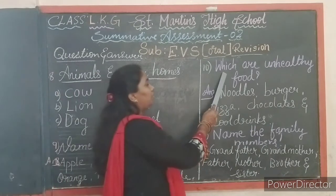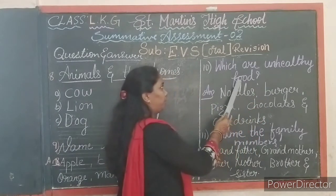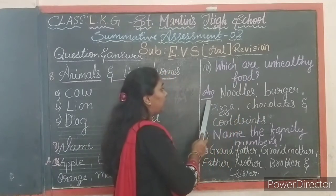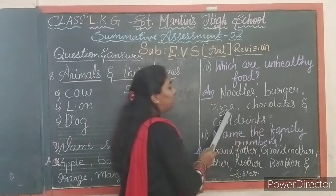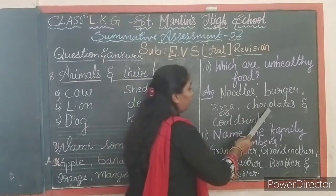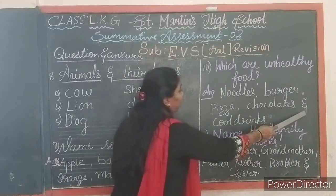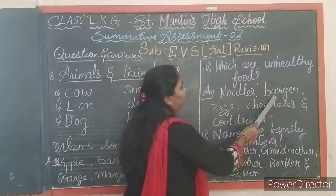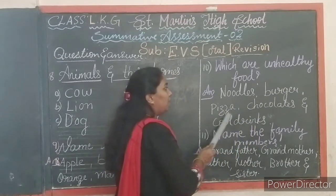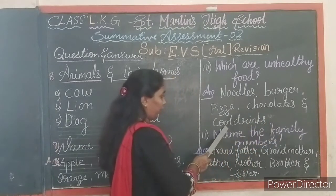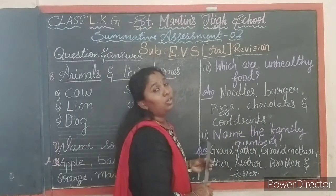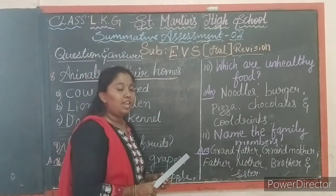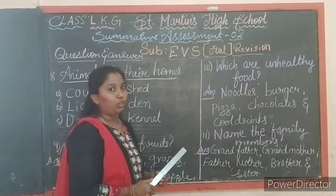Next question: which are unhealthy food? Answer — noodles, burger, pizza, chocolates and cool drinks. Say once again children — noodles, burger, pizza, chocolates and cool drinks. What are unhealthy foods? Noodles, burger, pizza, chocolates and cool drinks.